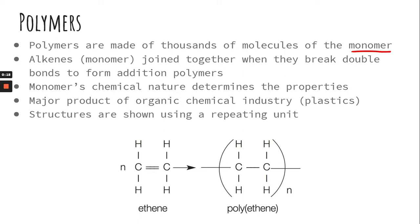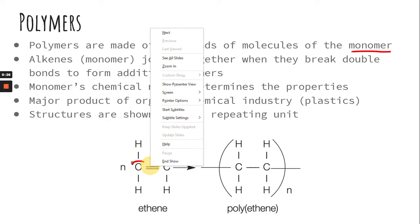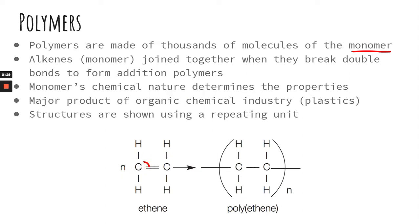Alkenes are the monomer, they're usually joined together when they break their double bond. So if you look down here at our example, ethene, that double bond is going to break to allow the carbon to bond on this side and then the carbon to bond on this side. So these two pieces right here is what used to be the double bond.